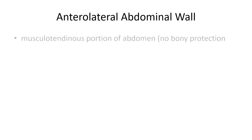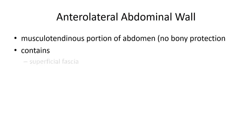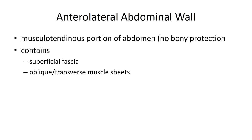As mentioned at the start of the video, the anterolateral abdominal wall is primarily composed of muscle, tendon, and fascia. There is a superficial fascial component composed of a loose and dense fascial layer. There are also three separate broad, flat muscles that wrap around the lateral aspect of the wall, a pair of longitudinal muscles found more anteriorly, and special attention will be given to the inferior portion of the wall that forms the inguinal canal.